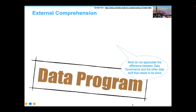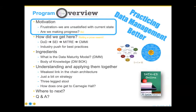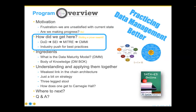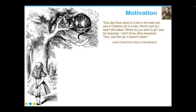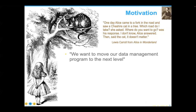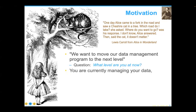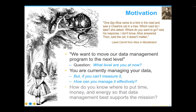So while we're not making lots of progress, let's talk about what the actual pieces are. This is a slide I love because it has Alice and the Cheshire Cat on it. Many organizations come in and say they want to move their data management program to the next level. But if you don't know what level you are on at the moment, you don't really have any idea what the next level is going to be. If you're currently managing your data but you can't measure it, how can you manage it effectively? How do you know where to put in time, money, and energy in order to support the mission better?